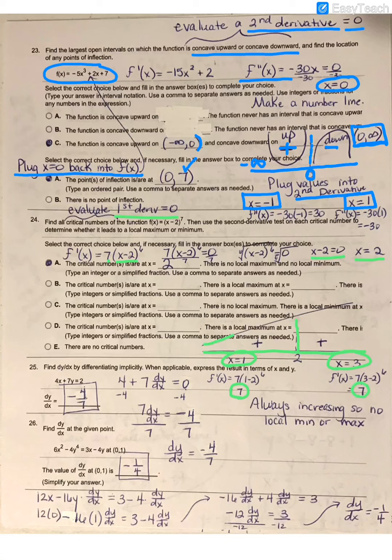So that means this graph is always increasing. And since there is no change from increasing to decreasing or vice versa, there is not a local max or a local min. So 2 is a critical value, but there is no local maximum or local minimum.